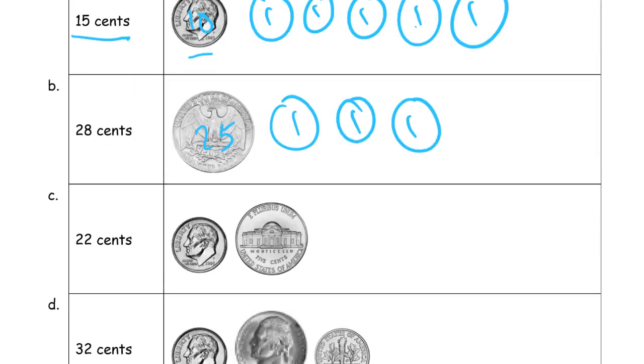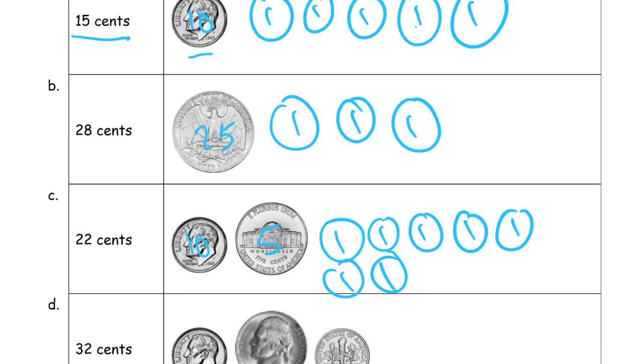22 cents. Well let's see, this dime is 10 and this nickel is 5. So 10 and 5, that's 15. So we need 16, 17, 18, 19, 20, 21, 22.